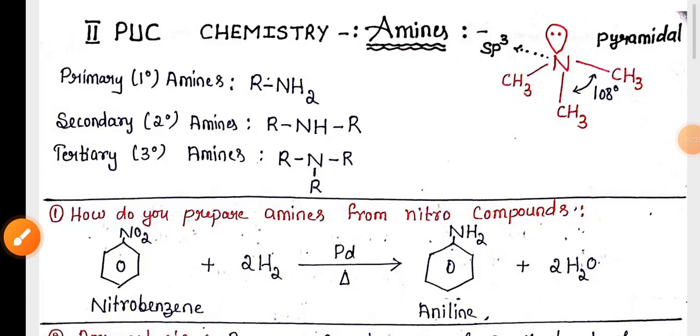The 2nd PUC Amines chapter is very important for the coming second unit test and annual exam. You can see the structure of amine here. The structure is pyramidal and nitrogen hybridization is sp3 and bond angle is 108 degrees.